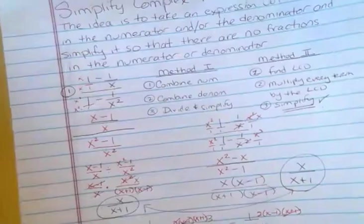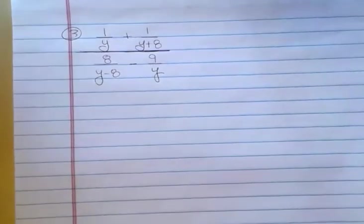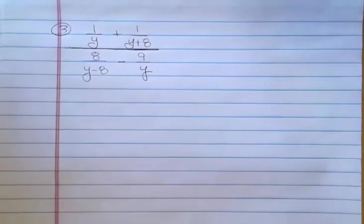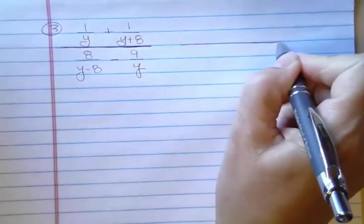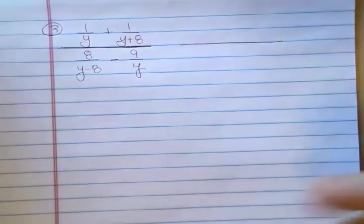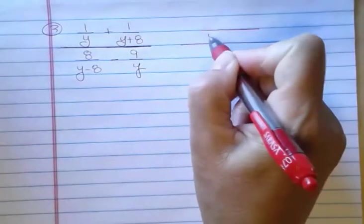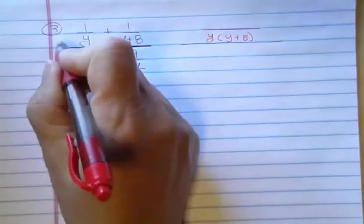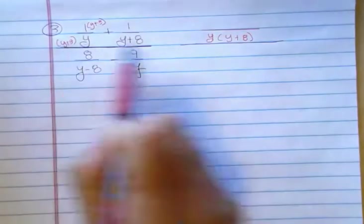One more example, and this one I'm going to use method 1 — combine the numerators, combine the denominators, and then divide. You might want to focus on just one of these methods; I just wanted to show you both. For me, sometimes one method is easier than the other, so I like knowing both. Here's my new fraction bar. What's my LCD on the top? Well, I have a standalone Y and a Y plus 8, so my LCD is going to be Y times Y plus 8. This one is missing the Y plus 8, so I have to multiply the top and the bottom by Y plus 8. That gives me this, which I already have, and 1 times Y plus 8 gives me Y plus 8.